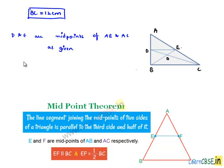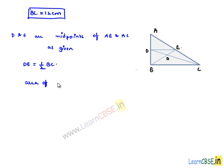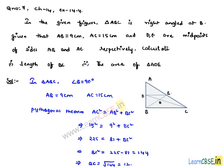we can say that DE will be half of BC, and the area of triangle ADE will be given by half times AD times DE, which equals half times AD, which is half times AB. But AB